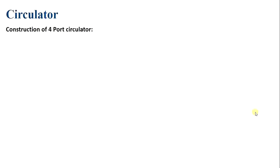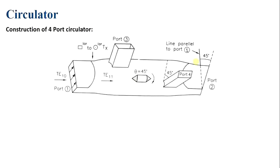Moving on to the construction of the four-port circulator: a four-port circulator can be made using a magic T and a non-reciprocal 180-degree phase shifter. A magic T is taken with a circular transition, and a ferrite rod is placed along the waveguide. The ports 1, 2, 3, and 4 of the magic T are identified.